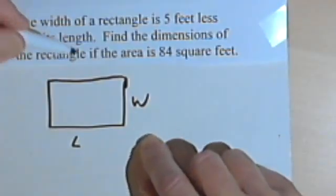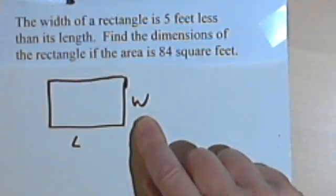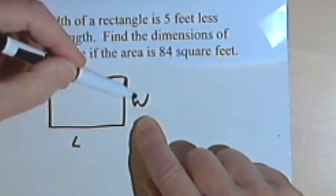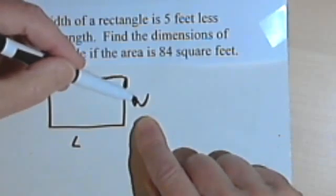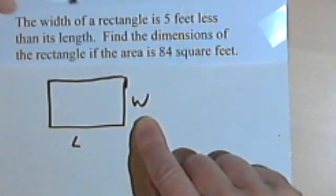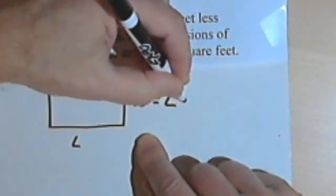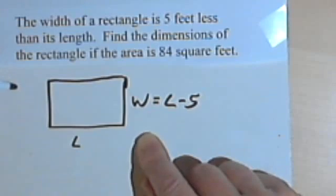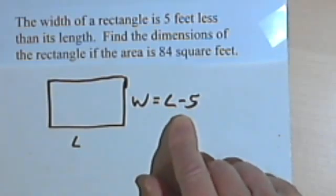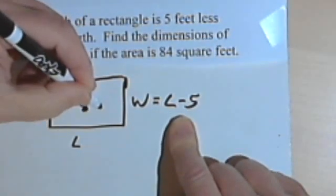If the width is 5 feet less than the length, then instead of having another letter, instead of having the w, I can just call the width—the width equals the length minus 5, because it's 5 feet less than the length.